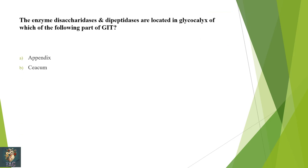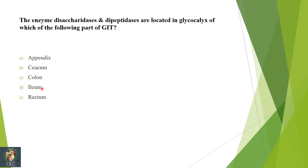Next: the enzymes disaccharidases and dipeptidases are located in the glycocalyx of which GI tract segment — appendix, cecum, colon, ileum, or rectum? All four are lined by glycocalyx, but disaccharidases and dipeptidases are present only in the glycocalyx of the ileum. So the correct option is ileum.